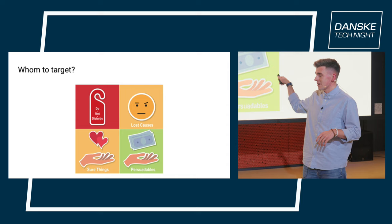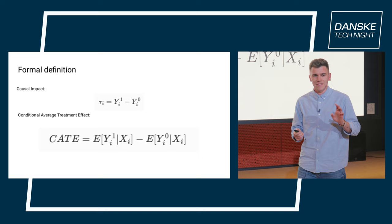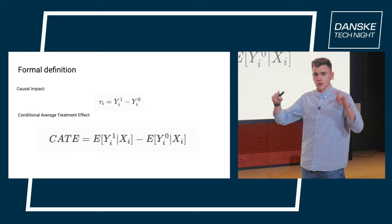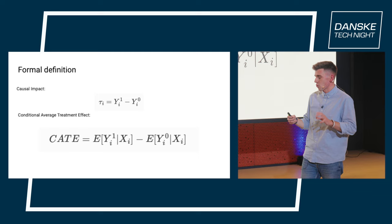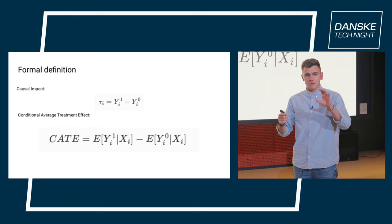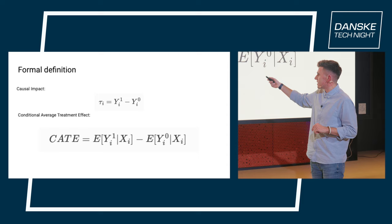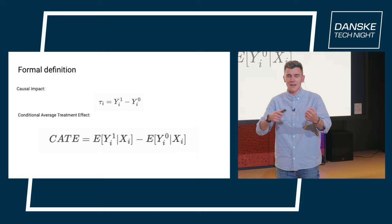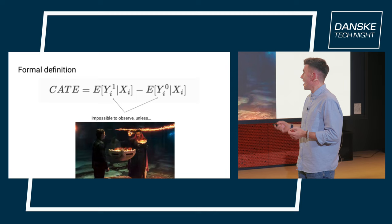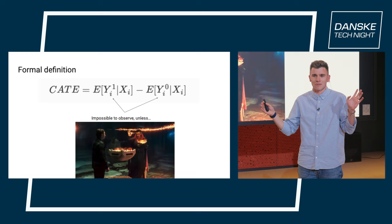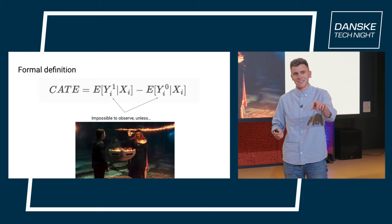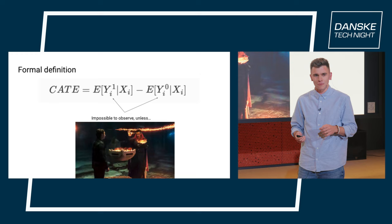A few formal definitions. In general, we're trying to estimate the causal impact — the business metric under treatment minus the business metric without treatment. More precisely, for every specific user, it's called the Conditional Average Treatment Effect, or CATE: the expected behavior under treatment minus the expected behavior without treatment. But there's a catch — it's actually impossible to observe both outcomes for the same user, because you don't have two parallel universes.